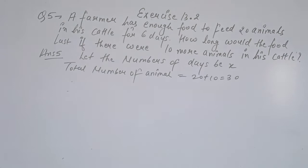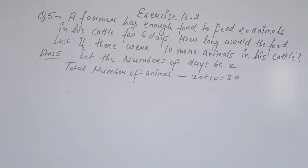So if there are 10 more animals in his cattle, how long will the food last? 20 plus 10 more animals means 30 animals total. Let the number of days be x. The total number of animals is 30.